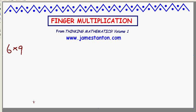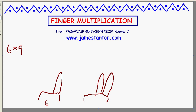6 times 9. Again, a closed fist is worth 5. But to make it 6, add a finger. A closed fist is worth 5. To make it worth 9, add 4 fingers. Raise 4 fingers. There we go. There's a representation of 6 and a representation of 9.